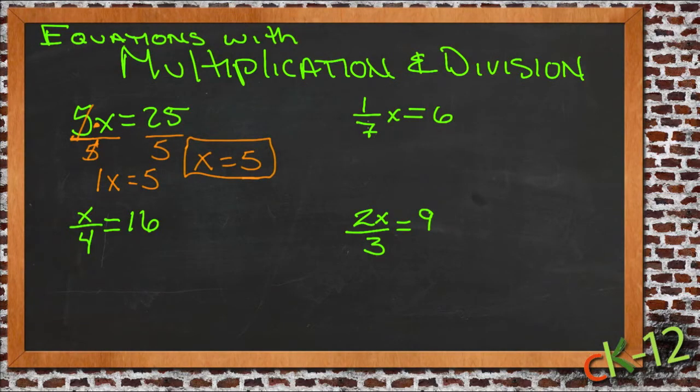Now a slightly more difficult version would be one that has a fraction in it. Here we have 1/7 times x equals 6. And there's really two ways to solve this. We could either multiply both sides by 7, in which case it would be just like the last problem where the 7s would cancel and we'd have 6 times 7 on the other side. Or we can divide both sides by 1/7, the fraction. I'm going to do it that way because the next problem is kind of like the first way, so you can see both options.